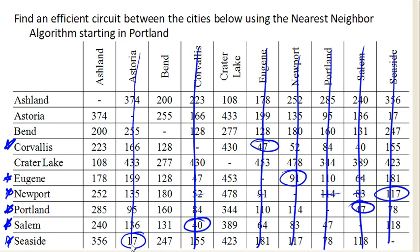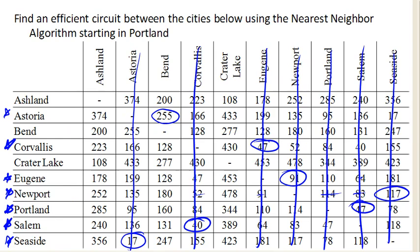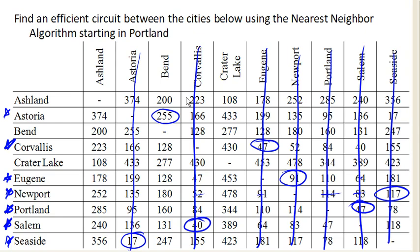Now I have visited Astoria. From Astoria, I'm apparently going a long ways — I'm going to Bend, Oregon. So from Astoria, I'm going to go to Bend, which was a whopping 255 miles away. Now I'm in Bend. From Bend, my next choice is Ashland, which is 200 miles away. So from Bend, I'm going to go to Ashland, which was 200 miles away.